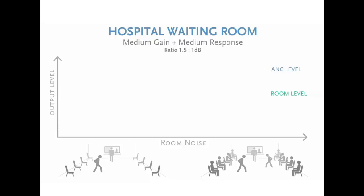Only one sensing microphone is required for the ambient noise compensation to work. However, in some cases more sensing microphones provide better coverage. For example, one microphone may be sufficient for a medium-sized foyer. However, using the example of a lengthy corridor, having multiple sense points would be better than just one.